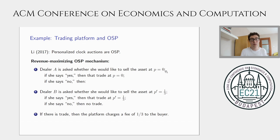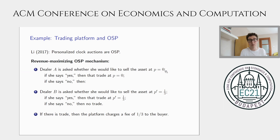The best OSP mechanism looks like this. You first go to dealer A and ask if she would like to sell the asset at a price of zero. If she says yes, she sells to dealer B at a price of zero. If she says no, we go to dealer B and ask if she would like to sell the asset at a price of one-third. If she says yes, that trade happens at one-third; otherwise there is no trade. Whenever there is trade, the platform charges a fee of one-third to the buyer.